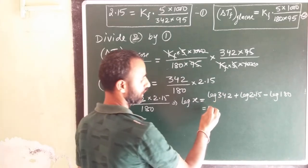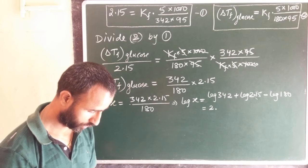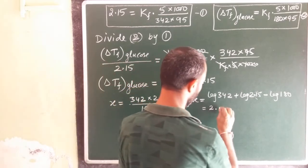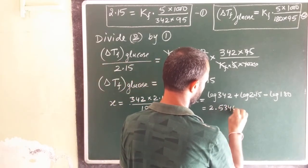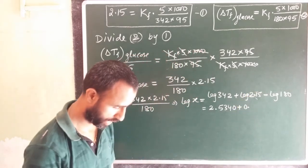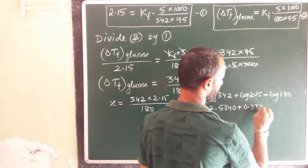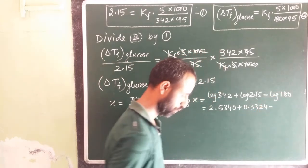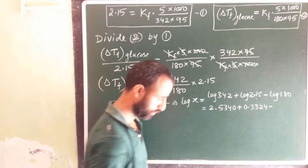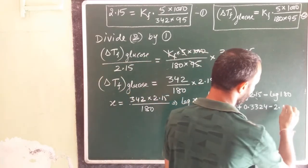Log of 342, it is 2.5340 plus log of 0.215, so log is 0.3324 minus log of 180, which is 2.2553.